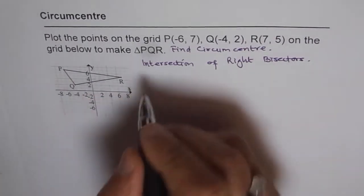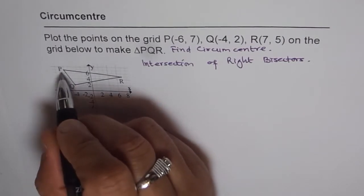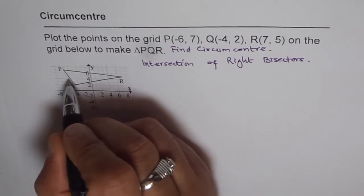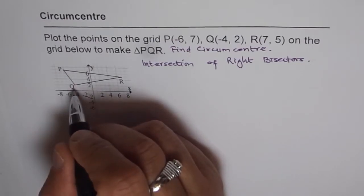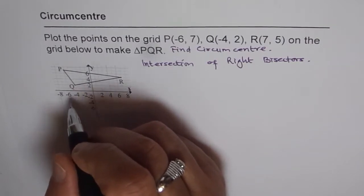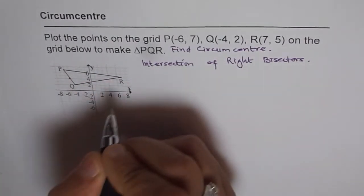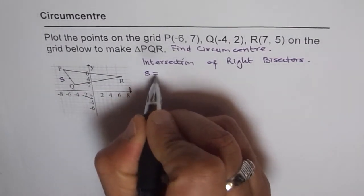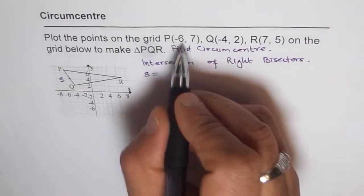To find the perpendicular bisector of PQ, we need the midpoint and the slope of PQ. The perpendicular bisector passes through the midpoint and is perpendicular to PQ, so its slope is the negative reciprocal of PQ's slope. Let's first find the midpoint of PQ — call it S. The coordinates of S will use the x and y values of P and Q.